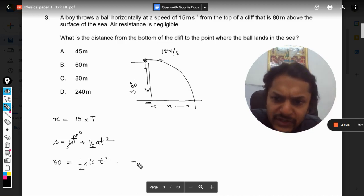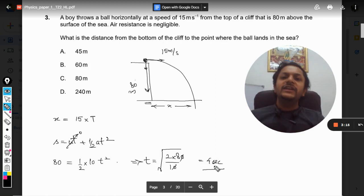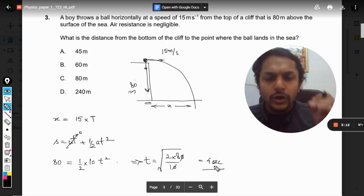This is coming out to be t² = 2 × 80 ÷ 10 = 16, which means t = 4 seconds. It will take 4 seconds to fall on the ground.